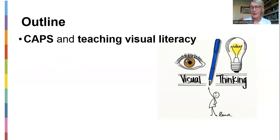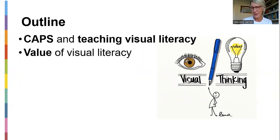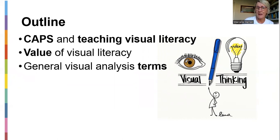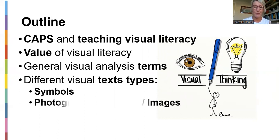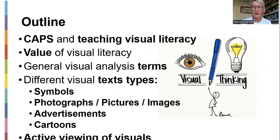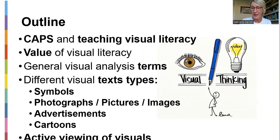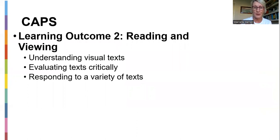Tonight's outline: we look at what CAPS says about teaching visual literacy; the value of visual literacy; analysis terms; genre elements used within visual literacy; different text types; symbols; photographs; advertisements; and cartoons. Then we look at how to actively go about viewing visuals — these are the genre elements you must discuss when preparing your workshop. CAPS says under reading and viewing, outcome two: you must understand visual texts, evaluate them critically, and respond to various kinds of visual texts.